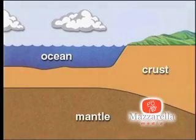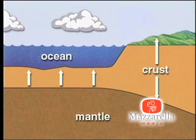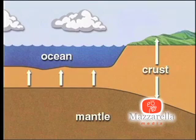It's interesting to note that the Earth's crust is not the same in thickness everywhere. The crust on the ocean floor is thinner than the crust under parts of the land. The crust is thickest where there are mountains.